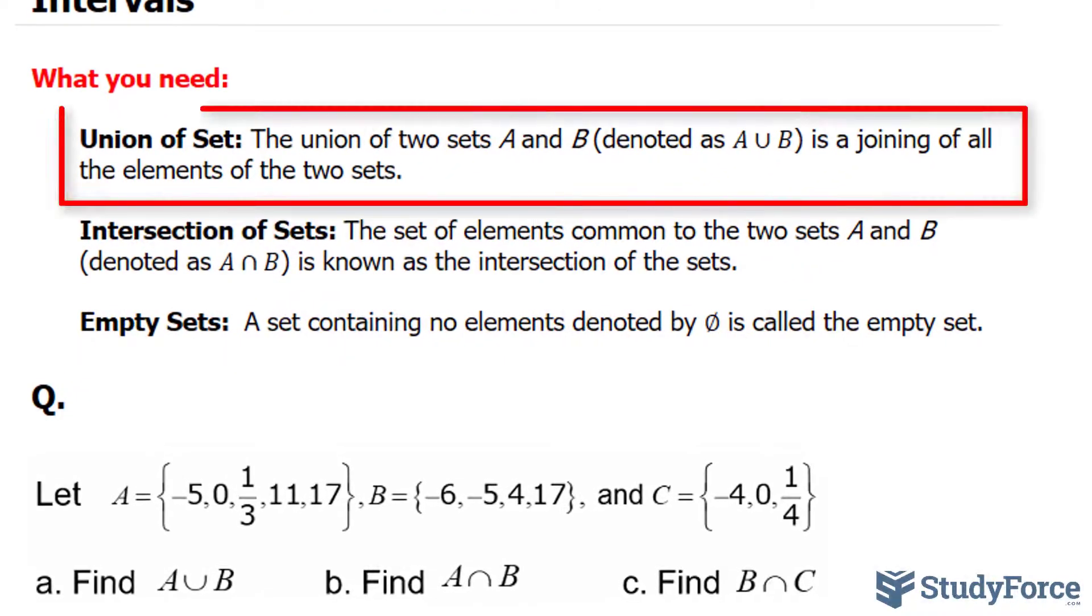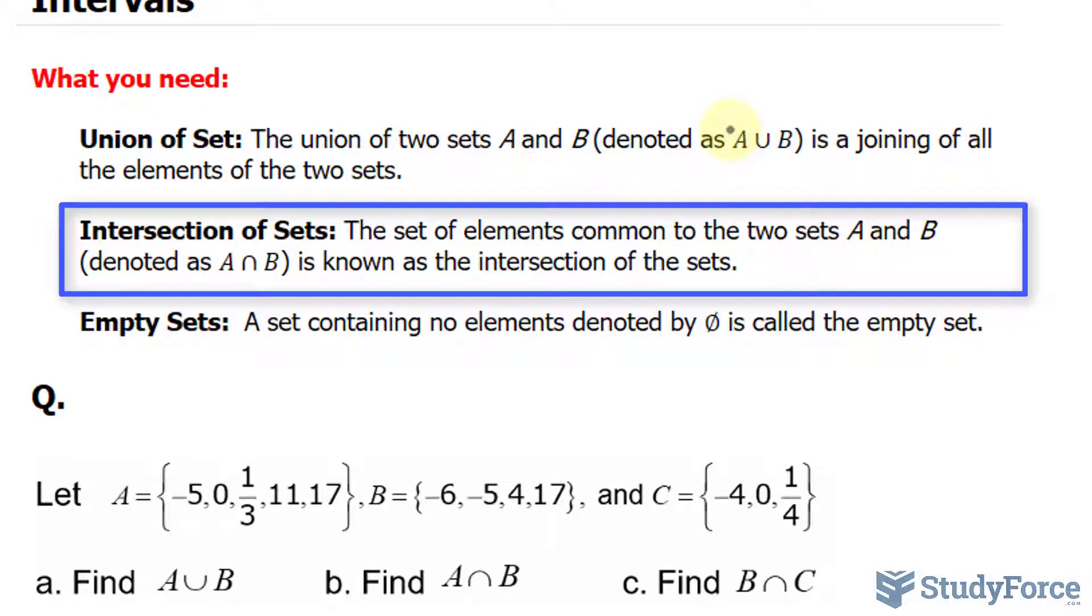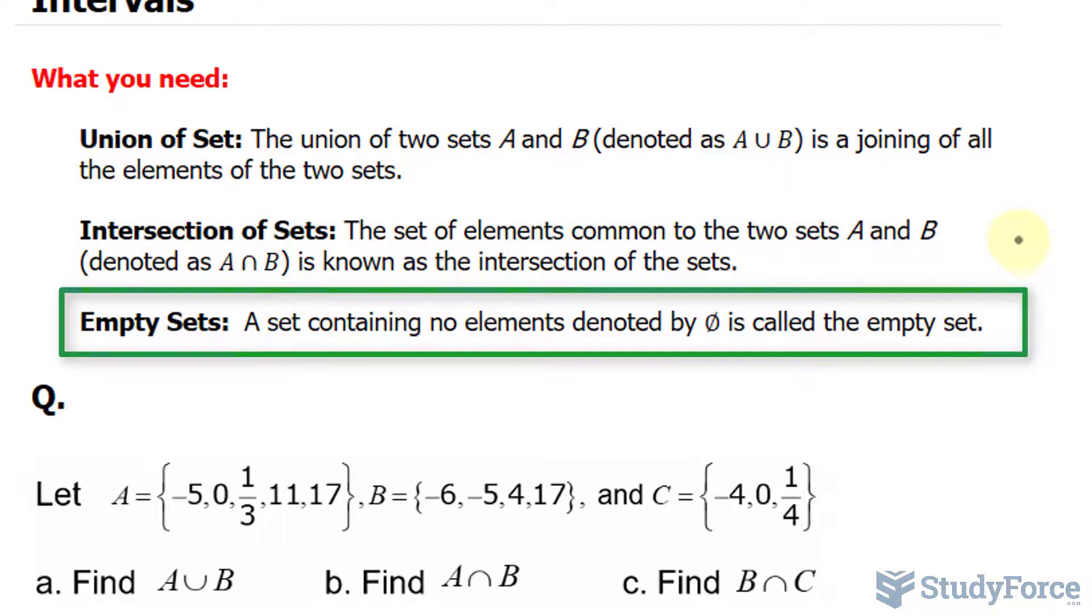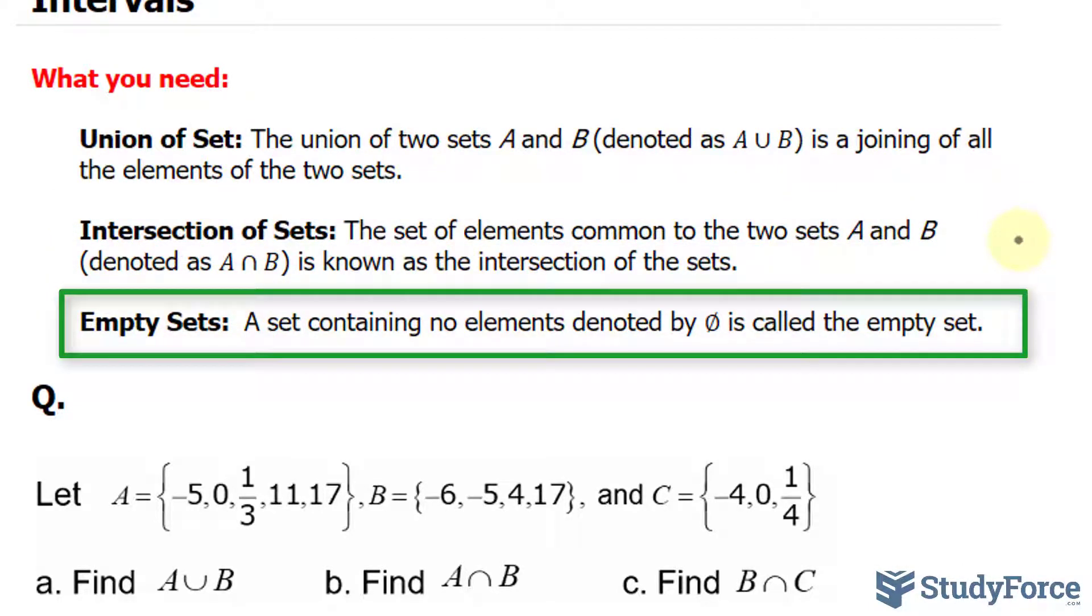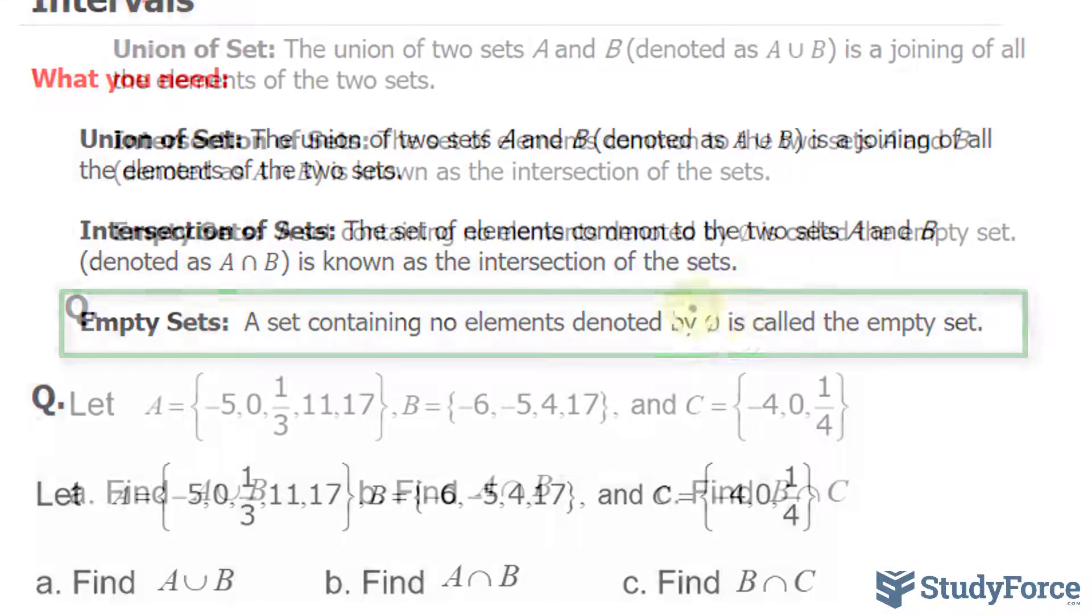The union of two sets A and B is denoted like this, and this is when you join the elements found in A and B into one set. We denote the set of elements that are in common between A and B using this symbol, and this is known as the intersection of sets. When there are two sets with no elements in common, we denote it with this symbol.